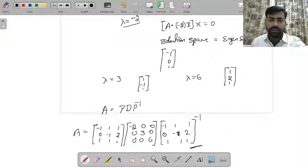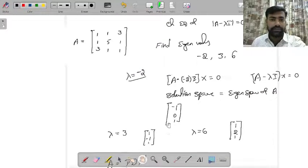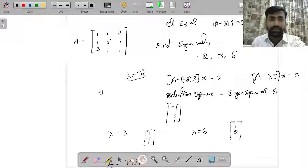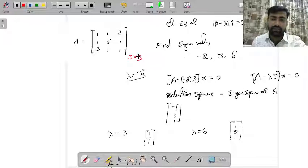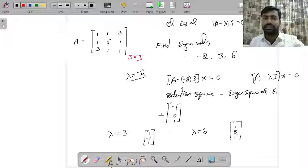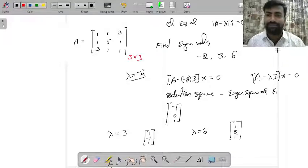That's it. This is the process. Find the eigenvalues, then the eigenvectors. Remember one thing: if it is a 3 by 3 matrix, you must find three linearly independent eigenvectors. If you can find them, then only we say the matrix is diagonalizable. So this is the process of diagonalization. I hope you understand. Thank you. Bye.